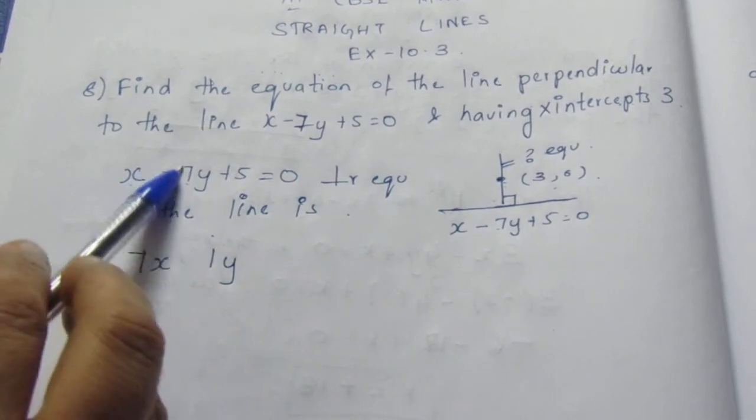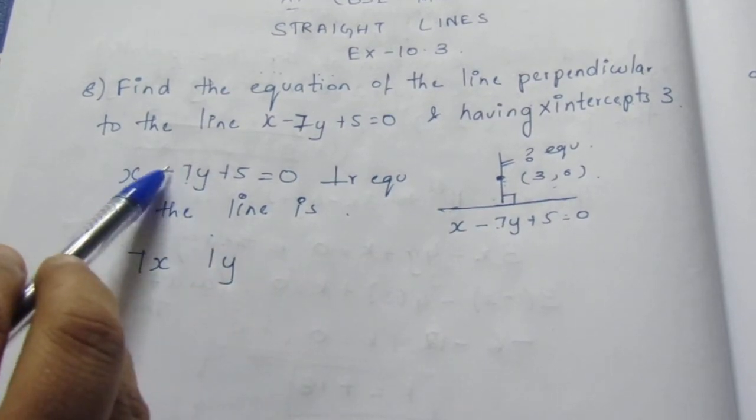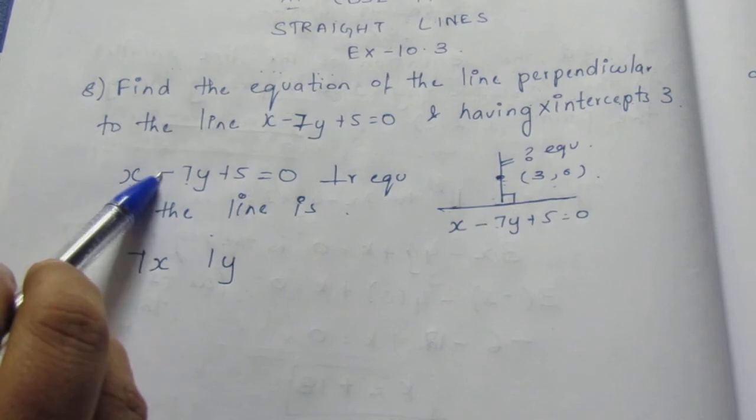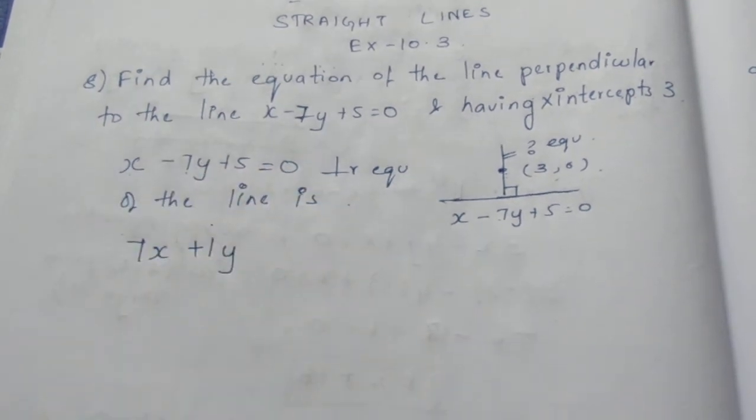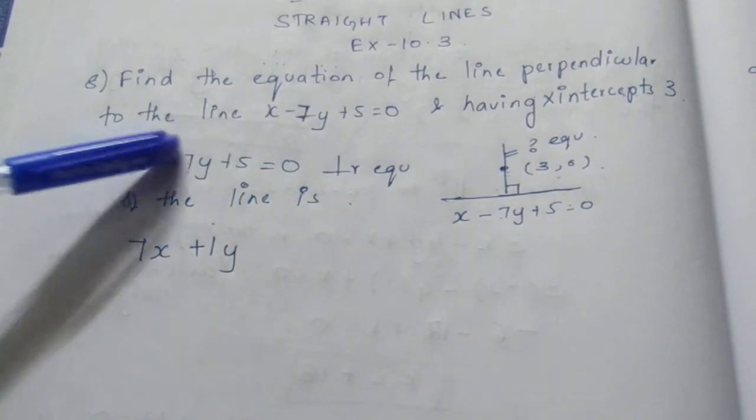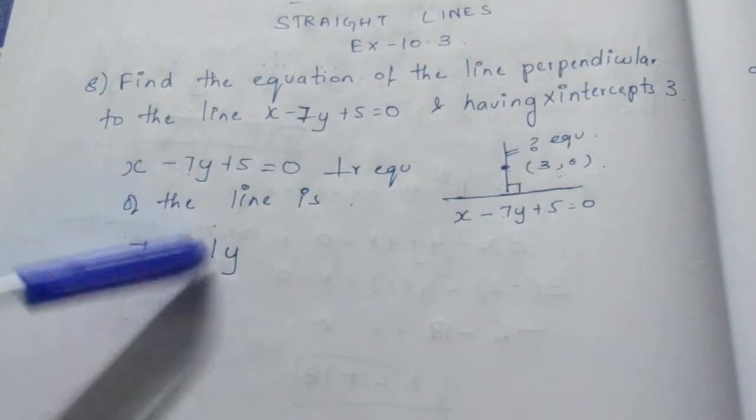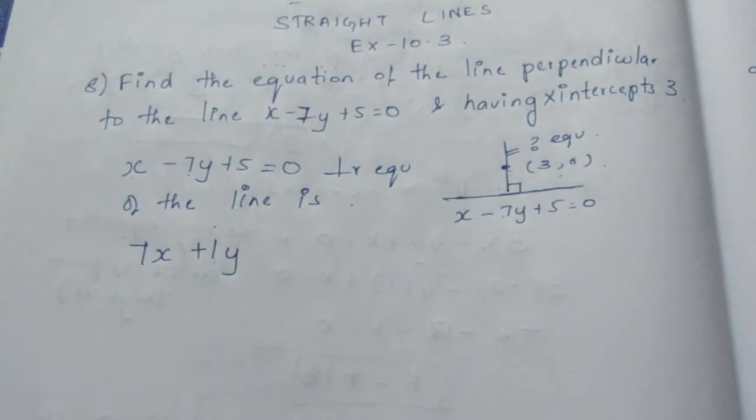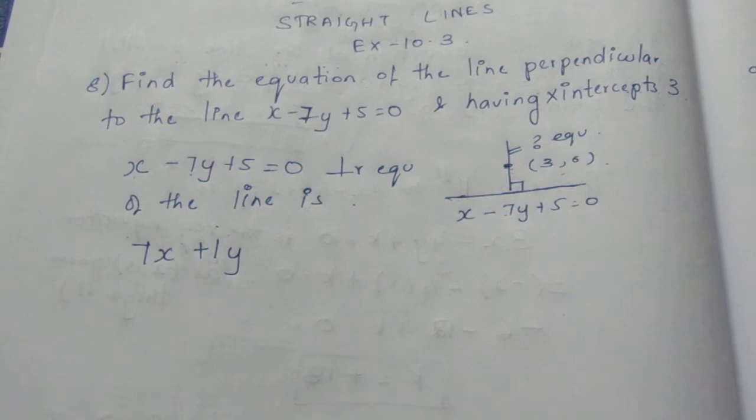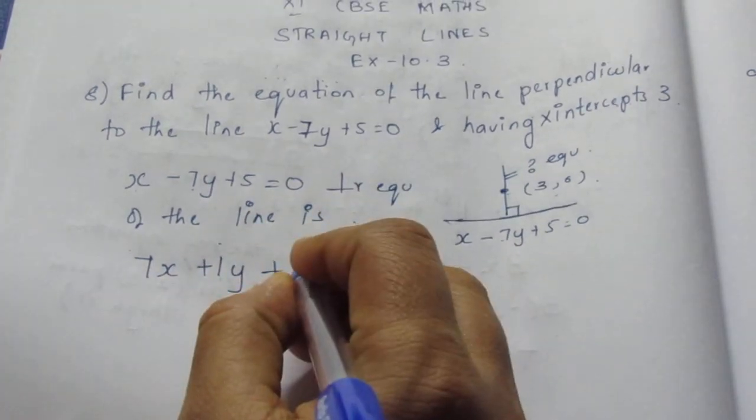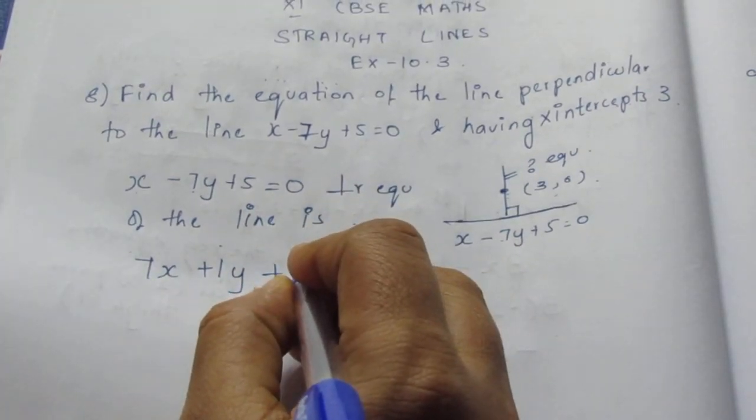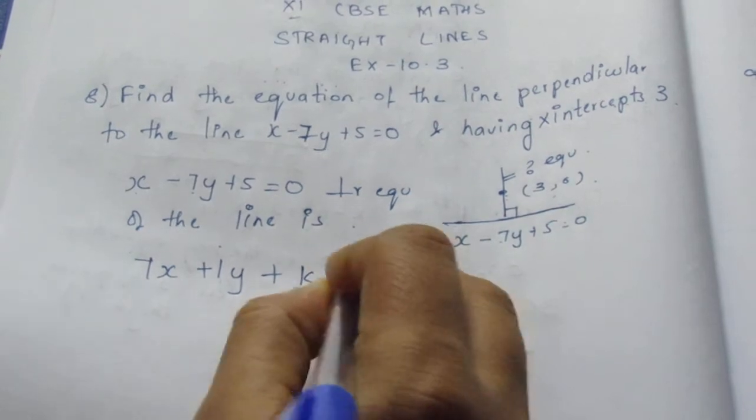We need to change the sign for y. If it is plus, minus; if it is minus, plus. Here it is minus, so I am writing it to be plus. So remember that we need to transfer the coefficient from x to y and y to x, and change the sign of y. If y is minus, plus; if y is plus, then minus. And the constant term varies, so let me take it to be k equal to 0.